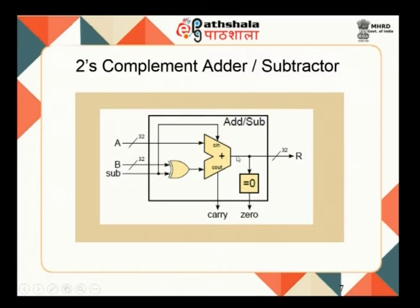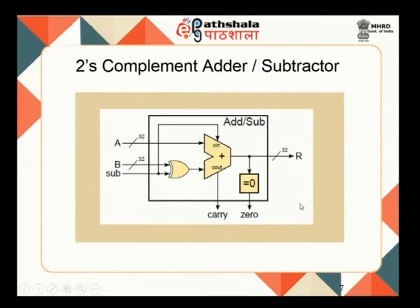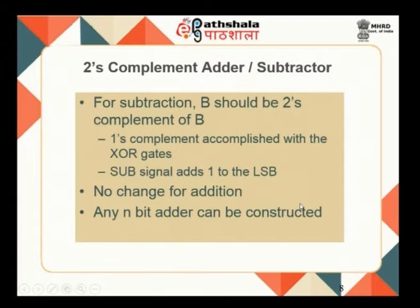So, 1's complement plus 1 gives you the 2's complement of the number. What gets added is not just the number — it is the 2's complement of the number, so it produces the subtracted value. If you have to detect for zeros, you have a circuit called a zero's detector that produces the output, allowing a combined operation of addition and subtraction using this circuit.